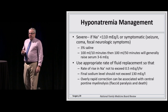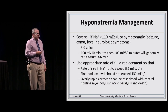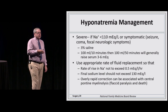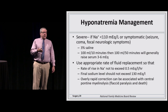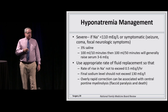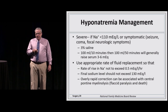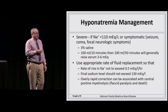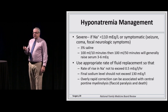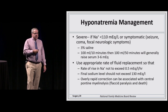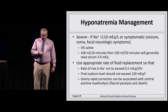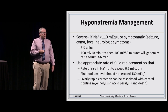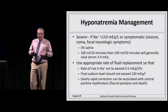Hypertonic saline is reserved for severe hyponatremia — sodium below 110 — or when the patient has neurologic findings. Give 3% saline: 100 mL over 10 minutes, then another 100 mL over 50 minutes, which should raise serum sodium by 3–6 mEq. The rate of rise should not exceed 0.5 mEq/L/hour, and you correct only to 130, not all the way to 135. Correcting too quickly can cause central pontine myelinolysis — an irreversible condition causing flaccid paralysis and death.